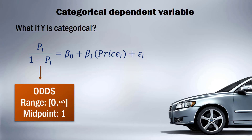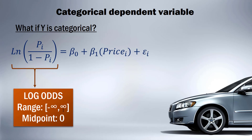With odds ranging from 0 to infinity and a midpoint of 1 (because 50% probability gives odds of 1), this range is a little better but still has two problems. First, there is still a hard lower limit of 0, which doesn't fully correct the issue of potentially negative estimates. Second, the distribution is extremely skewed — it rises sharply and has a very long right tail. In regression we like variables with a nice symmetrical, bell-shaped distribution.